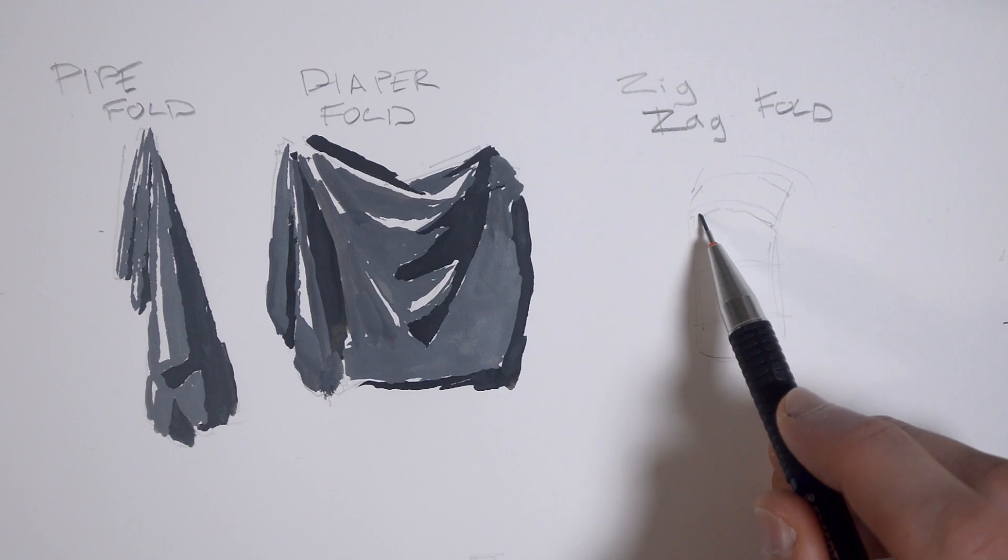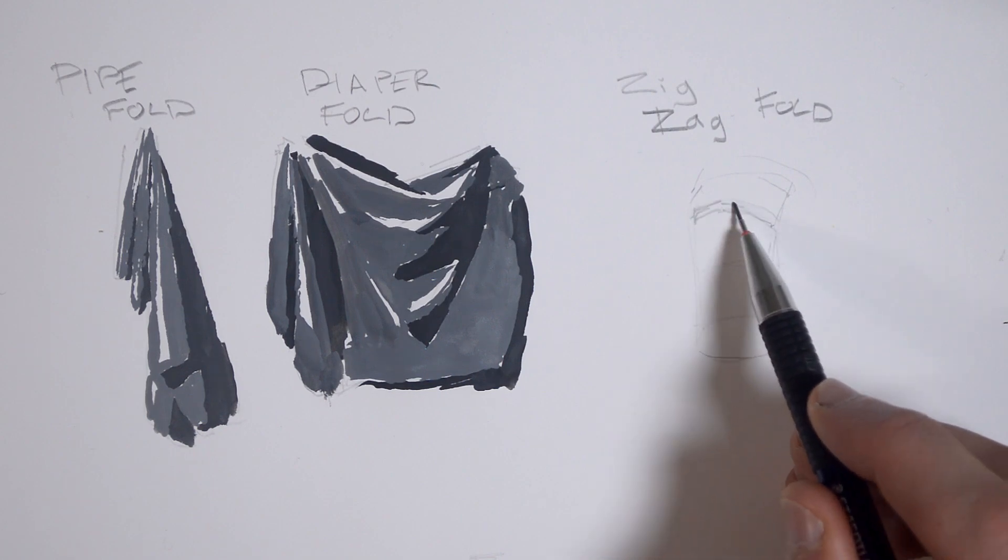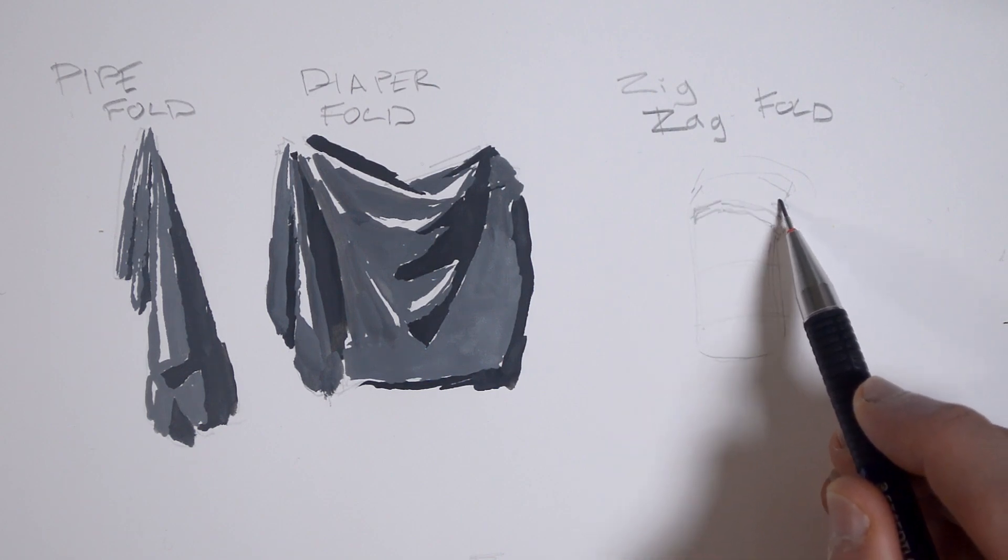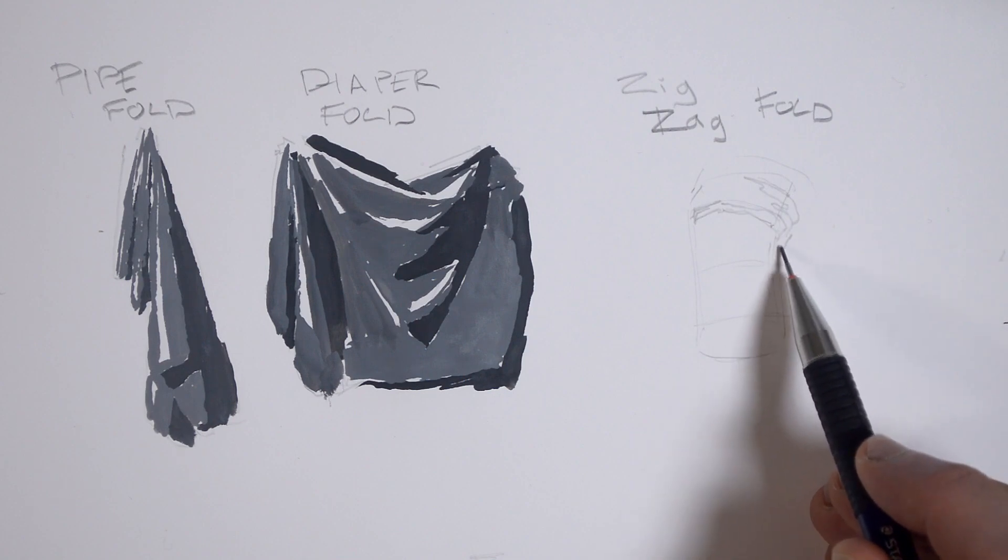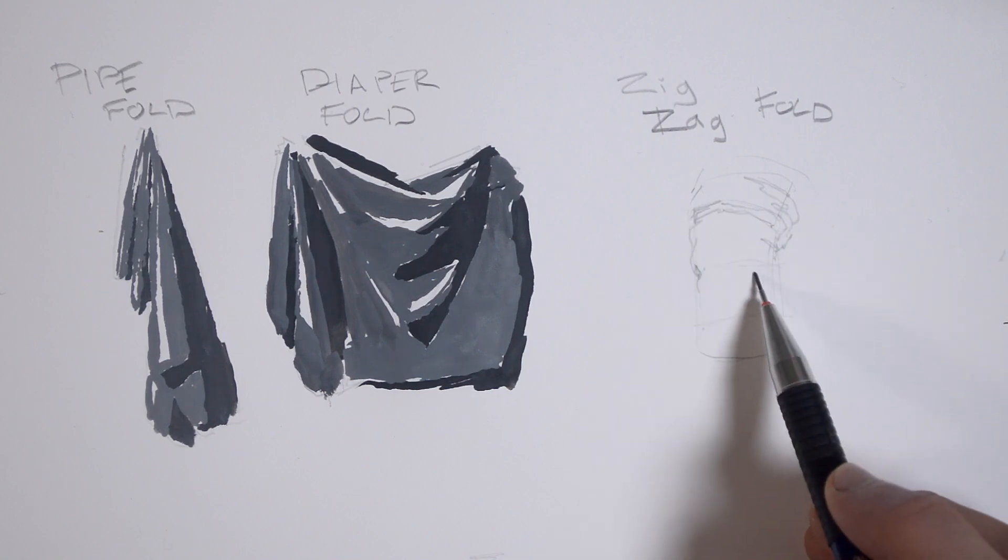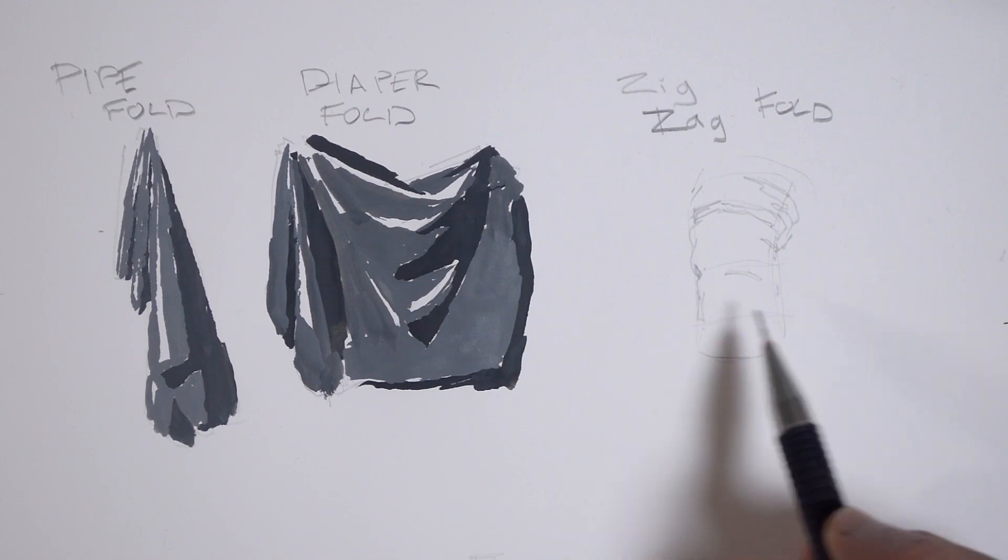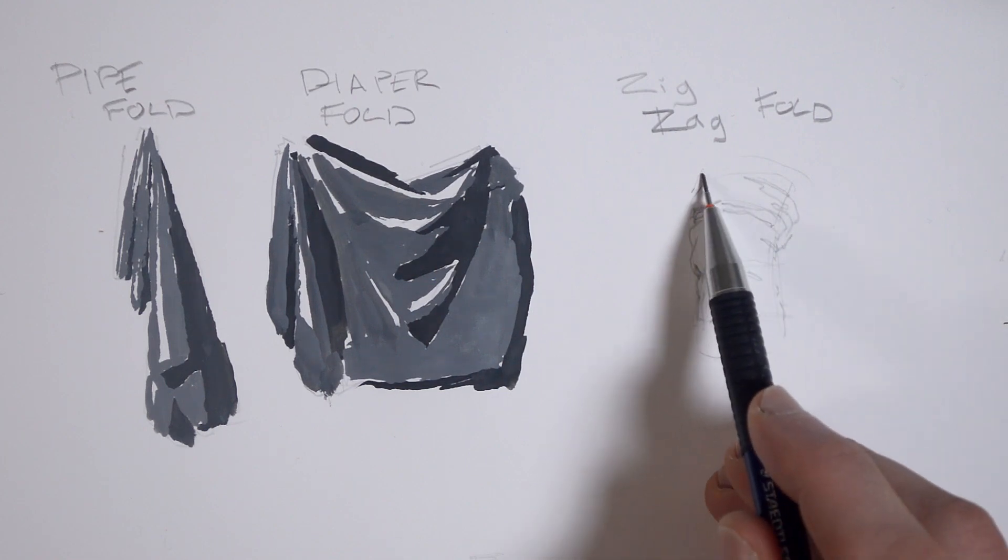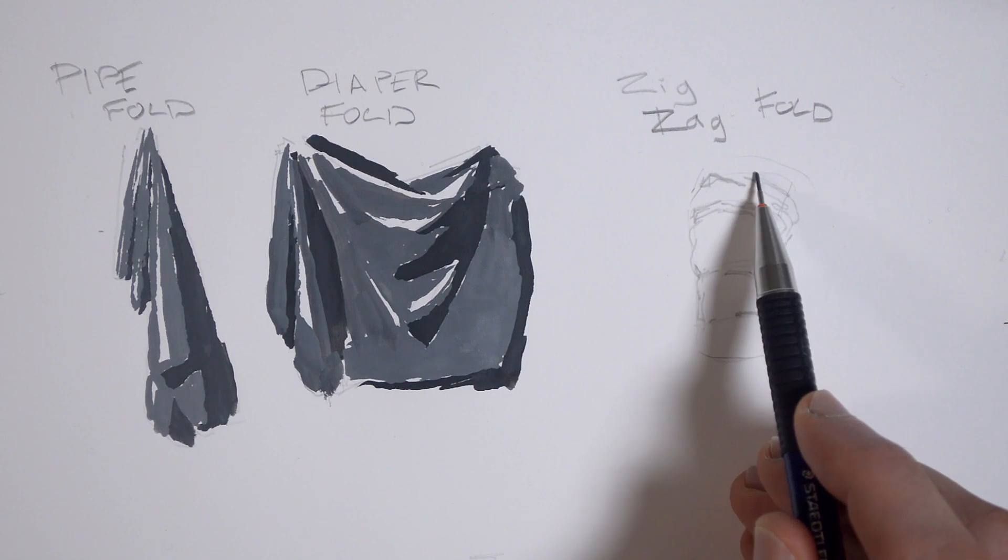On to the third fold, the zigzag fold. This one's created as a result of compression. When you roll up the sleeve of a sweater, you create zigzag folds, which spiral around the form. These aren't from twisting, however, which creates a separate fold, but compression alone. It's very common to see both the zigzag and spiral fold occur at the same time.